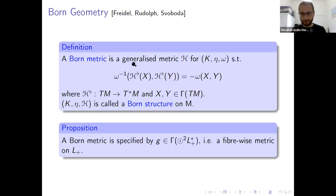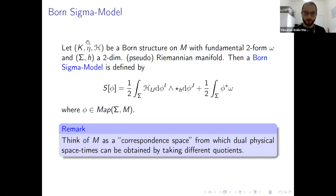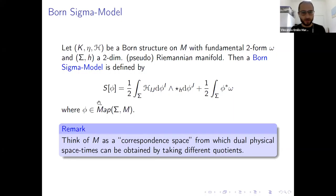Once we have our Born metric, we are ready to define our sigma model, which is simply the sigma model induced by the Born structure. It is defined by the Born metric H and the fundamental two-form associated with the parameission structure (k, eta) on which I define the Born metric H. In my notation, this is a functional in the space of maps from Sigma to M, where Sigma is a pseudo-Riemannian manifold and M is a Born manifold.